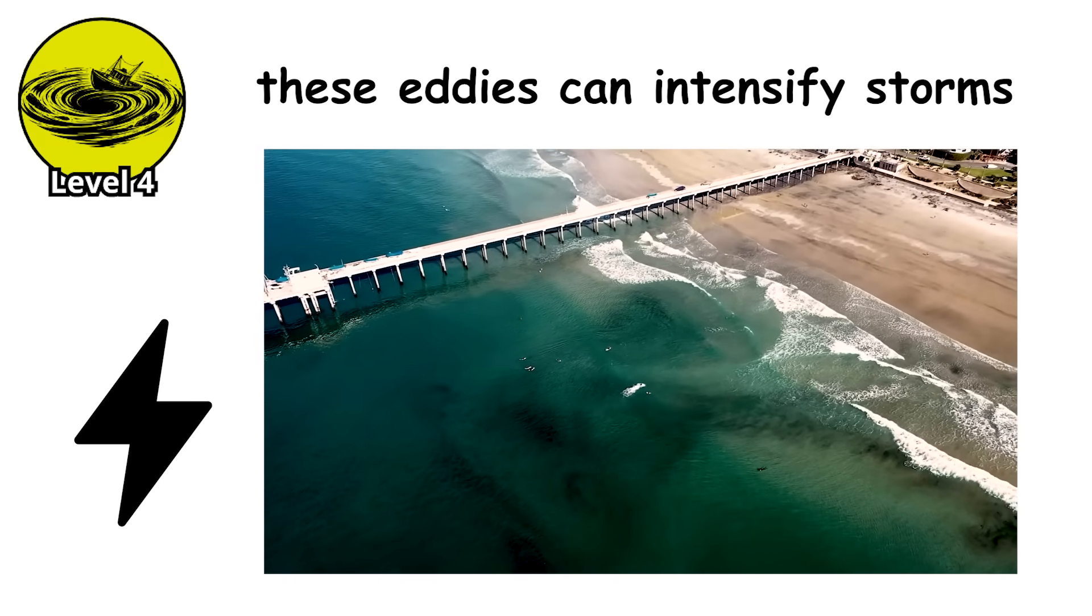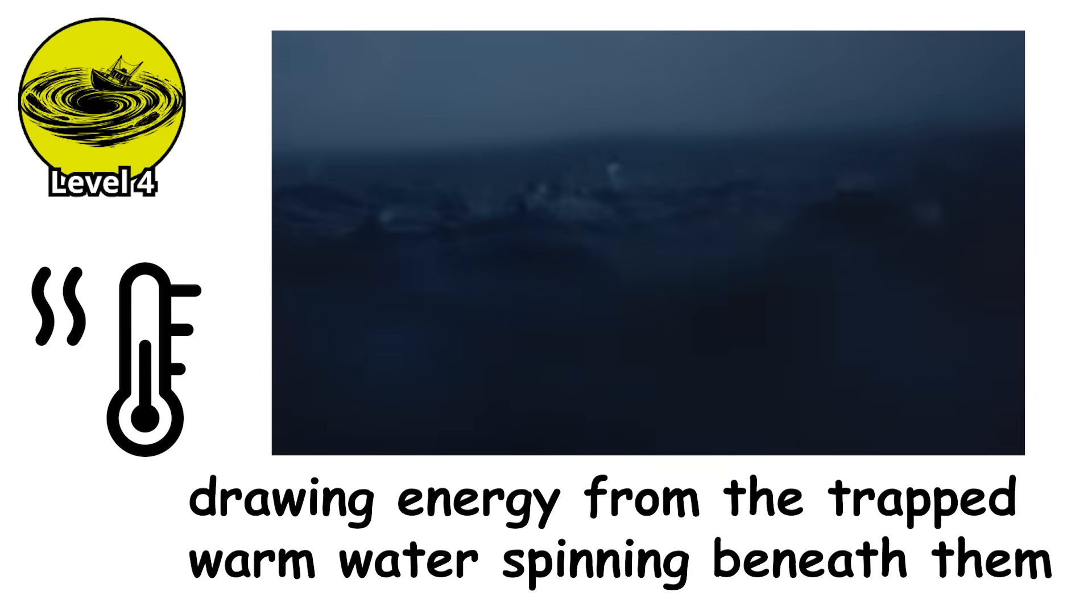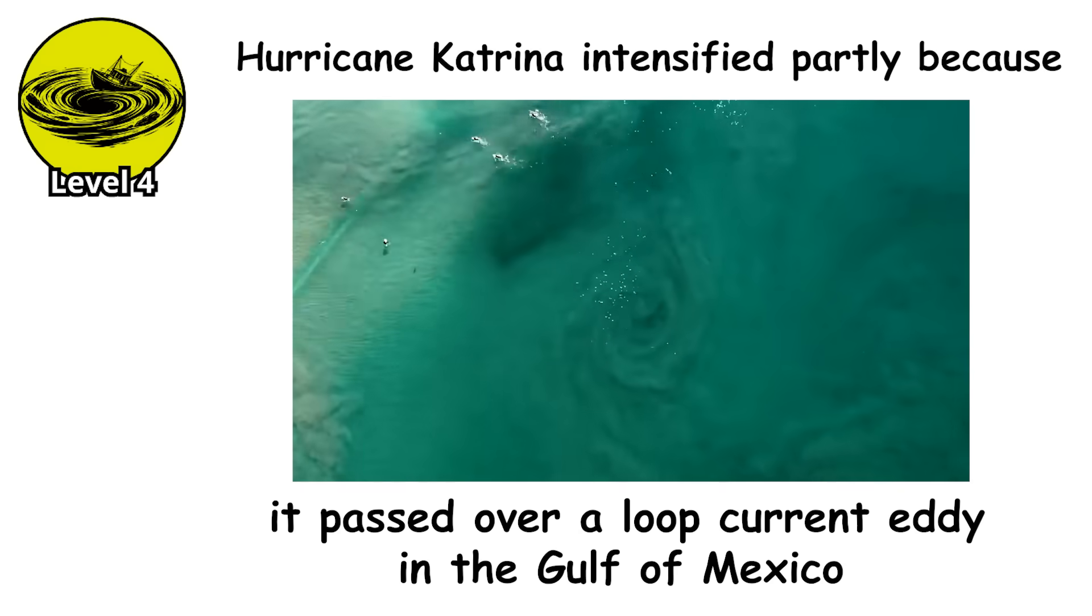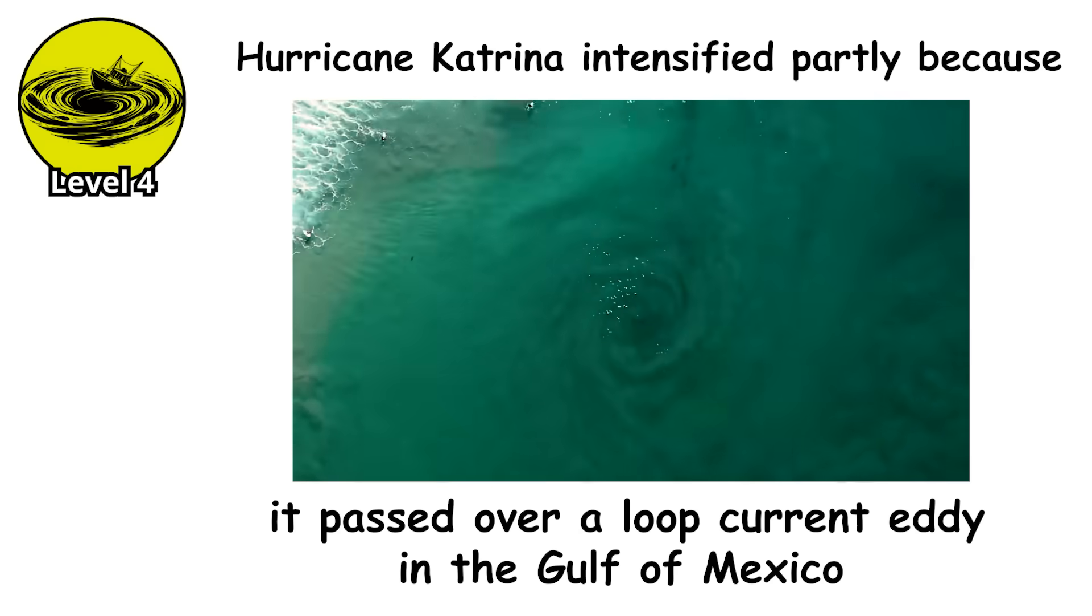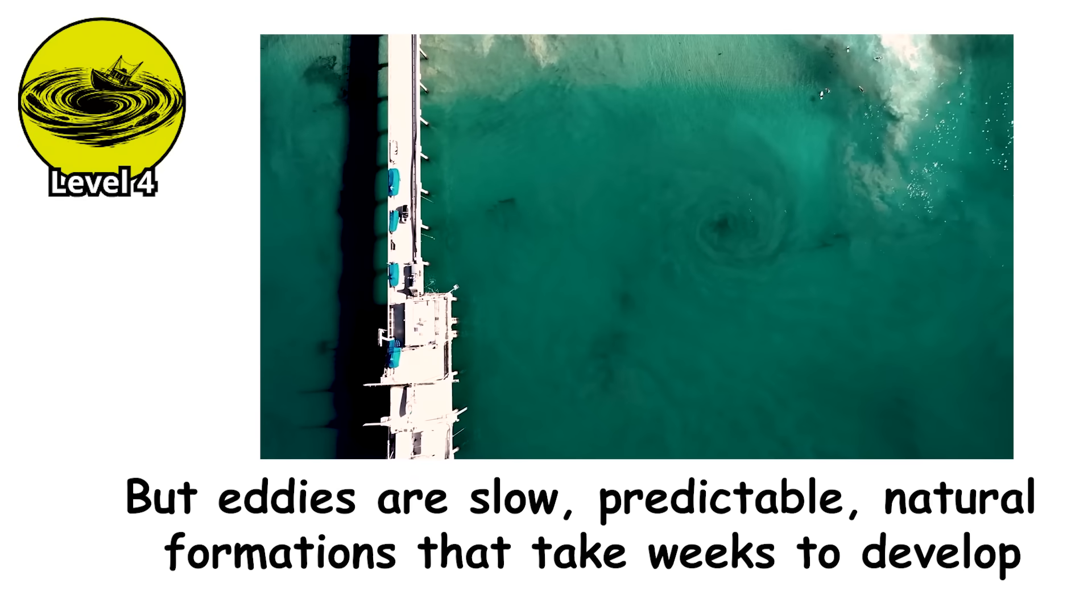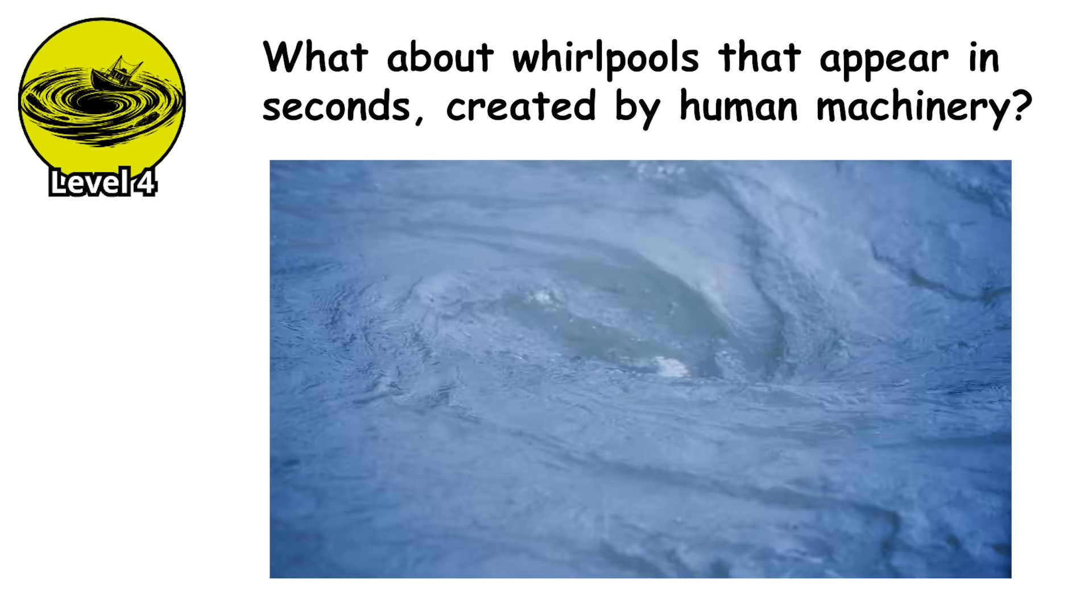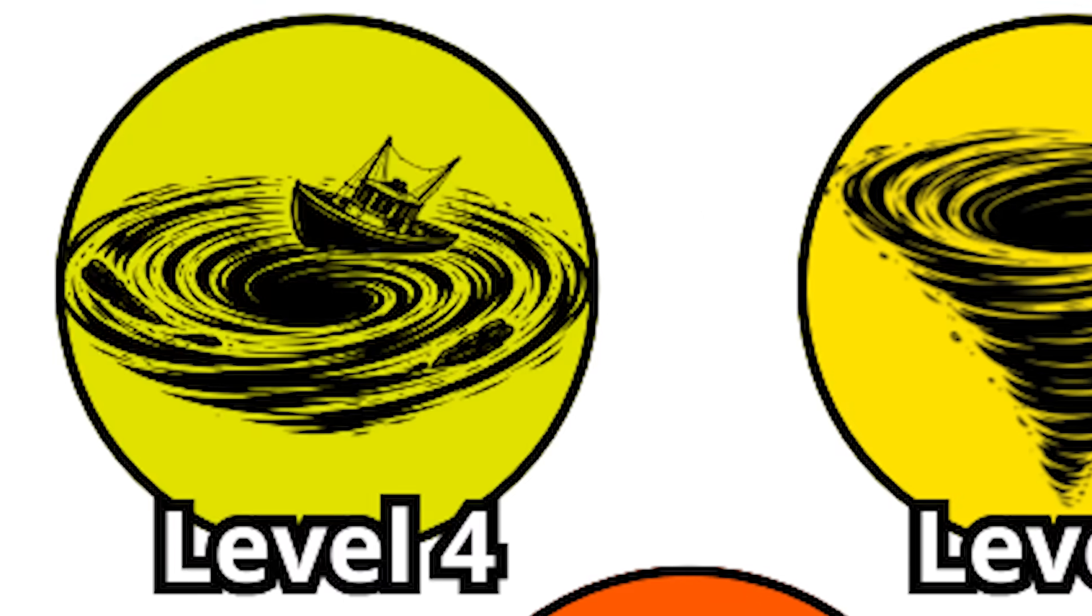But here's the disturbing part. These eddies can intensify storms. Hurricanes passing over warm core eddies can rapidly strengthen, drawing energy from the trapped warm water spinning beneath them. Hurricane Katrina intensified partly because it passed over a loop current eddy in the Gulf of Mexico, transforming from a manageable Category 3 into a devastating Category 5 in less than 24 hours. But eddies are slow, predictable, natural formations that take weeks to develop. What about whirlpools that appear in seconds created by human machinery? Level 5.